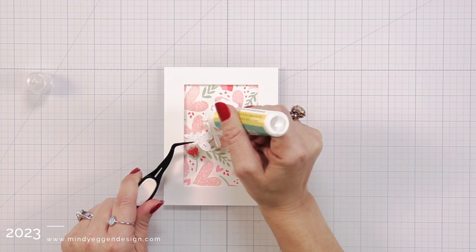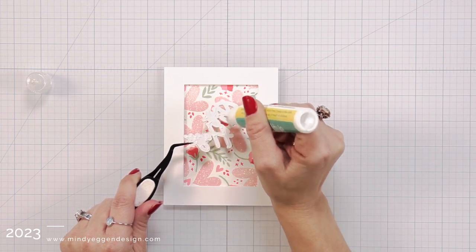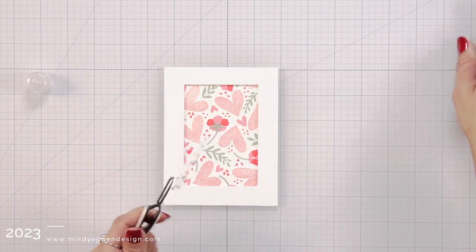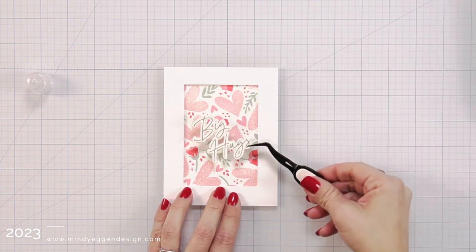Then I can go ahead and add some of the liquid glue behind my sentiment and place that in the center of my card. And I'm also going to tilt it a little bit.